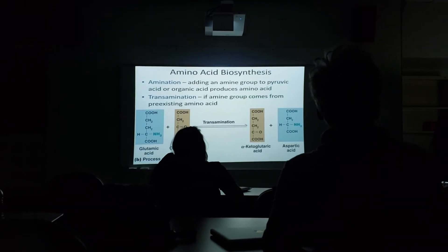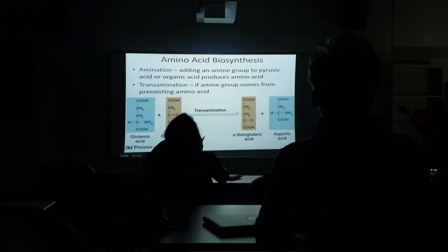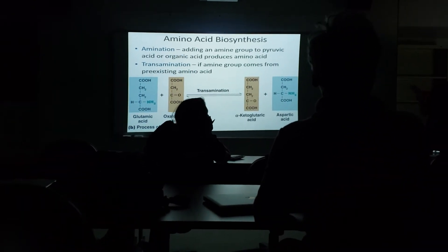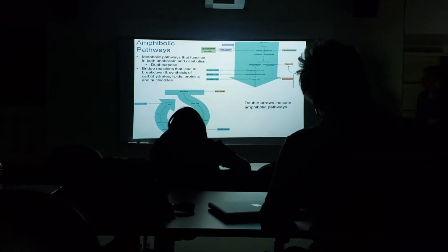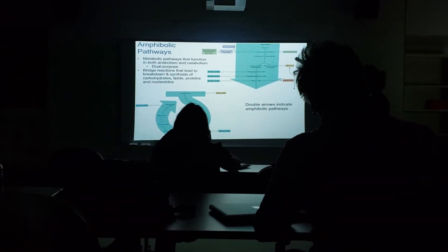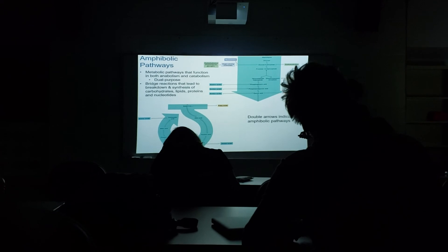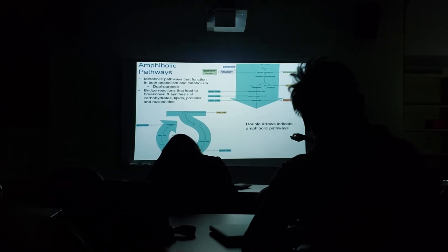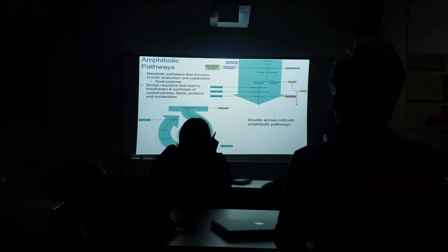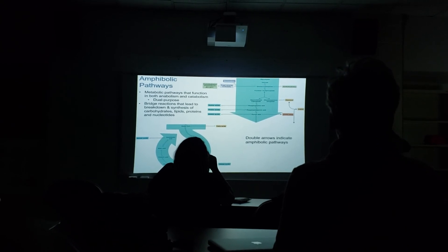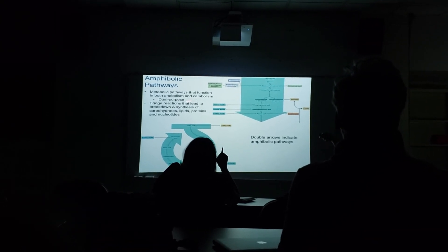Just like you de-aminated amino acids to get energy out of them, you're going to aminate them to make an amino acid. There are also amphibolic pathways. When you look at the Krebs cycle, it can run one way to get lots of energy — that's catabolism — but it can also run the other way to make fatty acids and amino acids. So the Krebs cycle can break stuff down and be catabolic, or it can build stuff up and be anabolic.